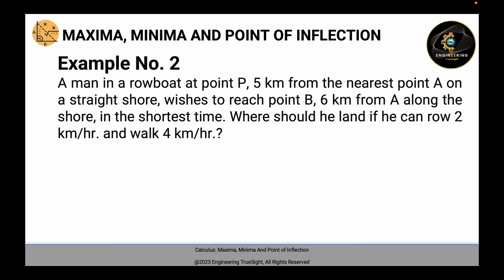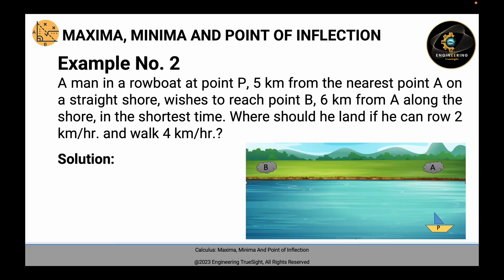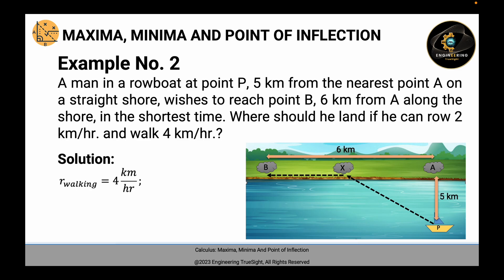We have problem number 2. A man in a rowboat at point P, 5 km from the nearest point A on a straight shore, is to reach point B, which is 6 km from A along the shore, in the shortest time. Where should he land if he can row 2 km per hour and walk 4 km per hour? To solve, we illustrate the problem: point P is directly opposite A at 5 km, and point B is 6 km from A. We have a certain unknown point X — the landing point that minimizes travel time. The rate walking is 4 km/hr and rate rowing is 2 km/hr.